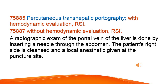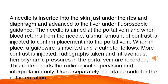The patient's right side is cleansed and a local anesthetic is given at the puncture site. A needle is inserted into the skin just under the ribs and diaphragm and advanced to the liver under fluoroscopic guidance. The needle is aimed at the portal vein, and when blood returns from the needle, a small amount of contrast is injected to confirm placement into the portal vein.